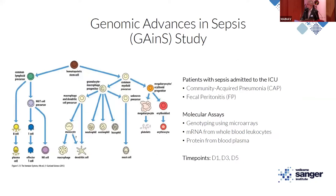These genetic questions are being answered in the Genomic Advances in Sepsis study, or the GAINS study. This is where most of my data comes from. The cohort consists of adult patients admitted to the ICU with either community-acquired pneumonia or fecal peritonitis — the two most common causes of sepsis in the United Kingdom.